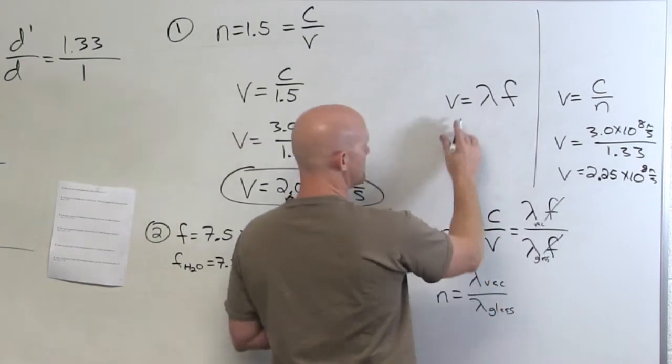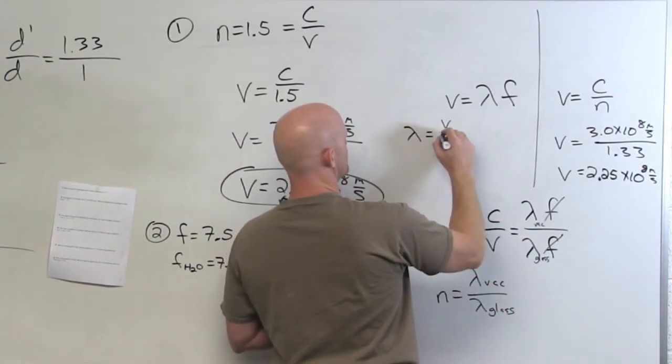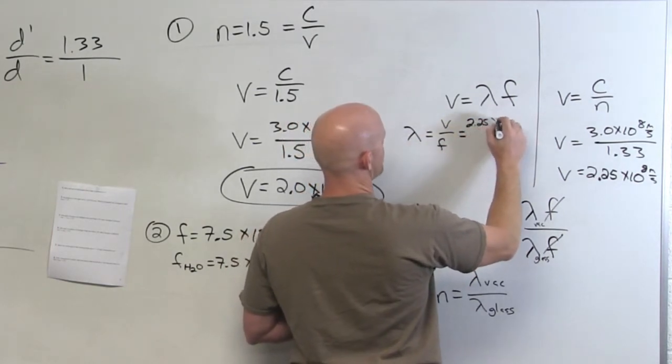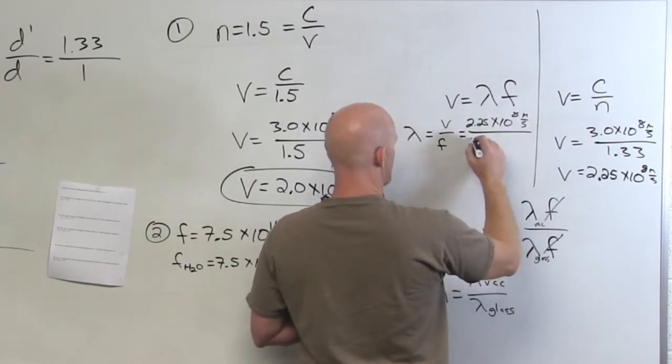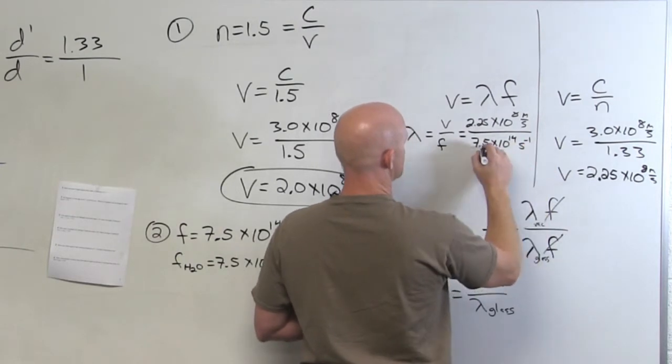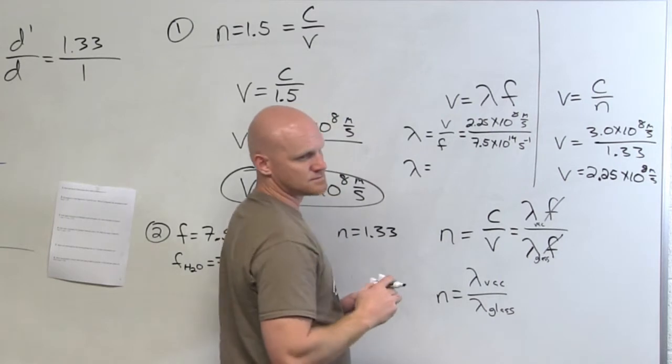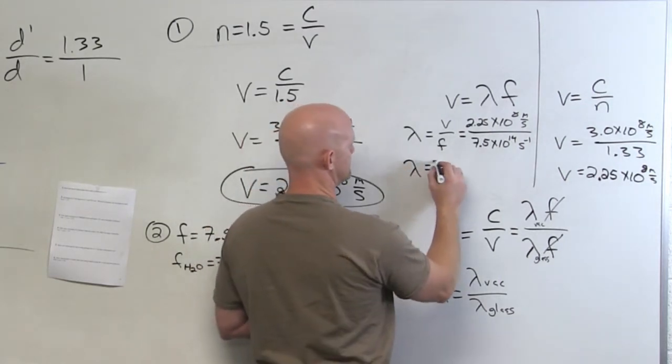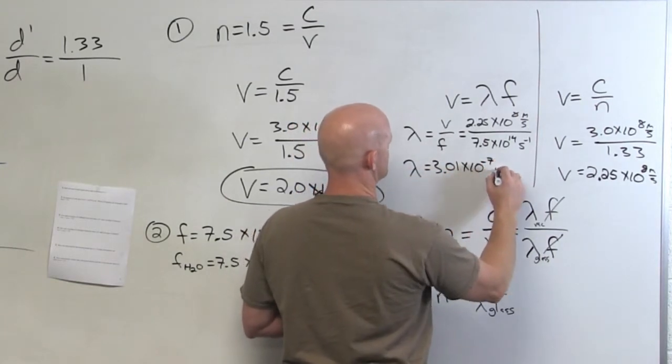And if that velocity is 2.25 times 10 to the 8th, if we rearrange this, our wavelength would equal the velocity over the frequency. So in this case, that would be 2.25 times 3.25 times 10 to the 8th meters per second, over our frequency of 7.5 times 10 to the 14th hertz.